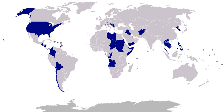1904, Dominican Republic, January 2 to February 11: American and British naval forces established an area in which no fighting would be allowed and protected American interests in Puerto Plata and Sosua and Santo Domingo City during revolutionary fighting. 1904, Tangier, Morocco: a squadron demonstrated to force release of a kidnapped American. Marines were landed to protect the consul general. 1904, Panama, November 17 to 24: U.S. forces protected American lives and property at Ancon at the time of a threatened insurrection. 1904–1905, Korea, January 5, 1904 to November 11, 1905: a guard of marines was sent to protect the American legation in Seoul during the Russo-Japanese War.